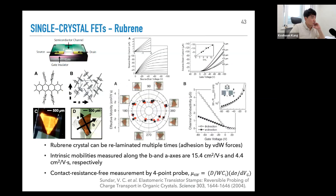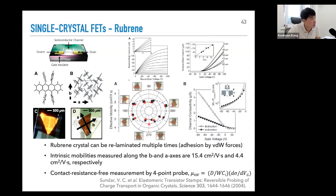From these pentacene morphologies, the mobility values show that dendritic and pyramidal shapes have the best mobilities, while giant grain and lamella morphologies perform less well. This tells us that we want to form a dendritic morphology to enhance transport in thin film pentacene. That is one way to tune mobility.